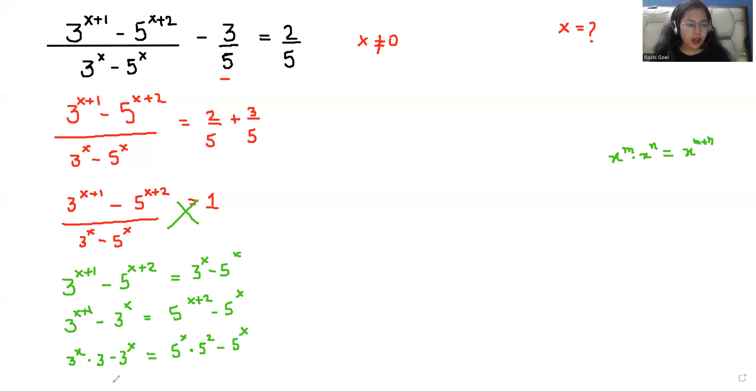Now, I can take 3 power x common. If I take common 3 power x, what is left? 3 minus 1. And on RHS side, if I take 5 power x common, then 5 square minus 1.